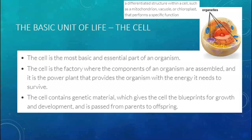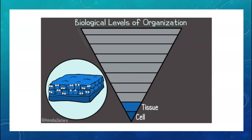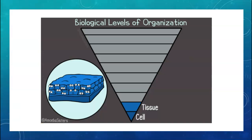When you have a group of cells that are all performing a similar function, they organize into tissues. A tissue is a group of cells that are similar in structure and that work together to perform a certain function. For example, stomach cells will work together to perform a specific function, and those stomach cells will organize into stomach tissue. After the cells organize into tissues, the tissues then organize into organs.